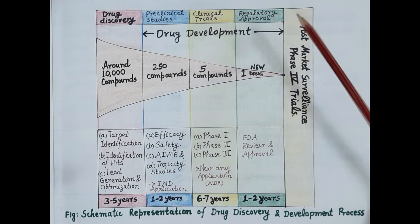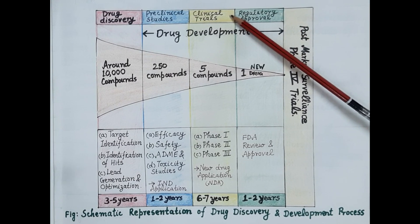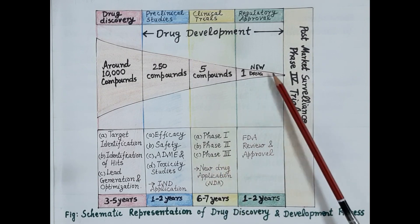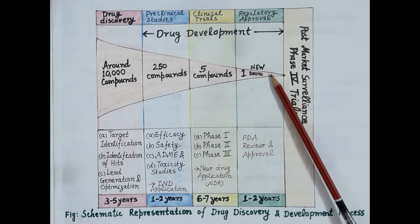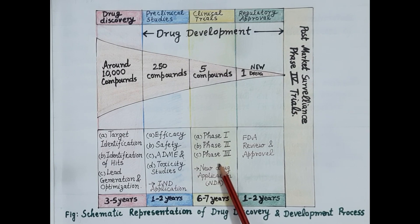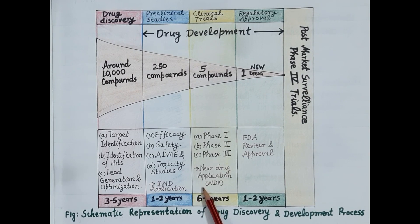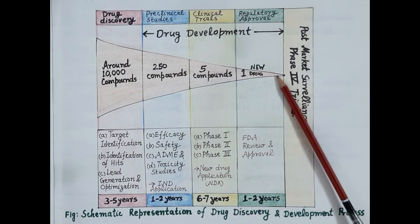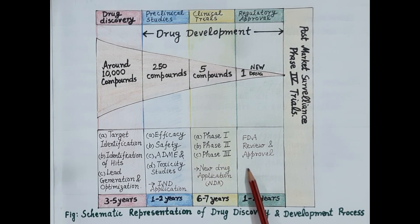If the FDA finds the IND application satisfactory, approval is granted to conduct studies in human beings, and clinical trials are conducted in three phases: Phase 1, Phase 2, and Phase 3. By the end of clinical trials, all compounds are rejected and only one drug candidate — the new drug — is identified. The NDA is submitted to FDA for review. All three phases of clinical trials are completed in around six to seven years. If the FDA approves, marketing approval is granted in about one to two years.